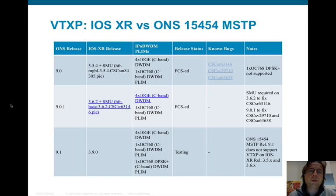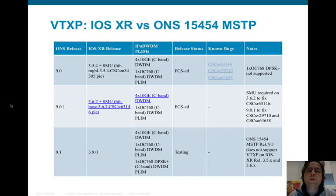VITO Transponder was originally introduced in release 9.0. At that time, the required IOS XR release was 3.5, and the supported IP over WDM interfaces were the 4x10 ITU and the 1x40 OC768, or 1x OC768 dual binary.